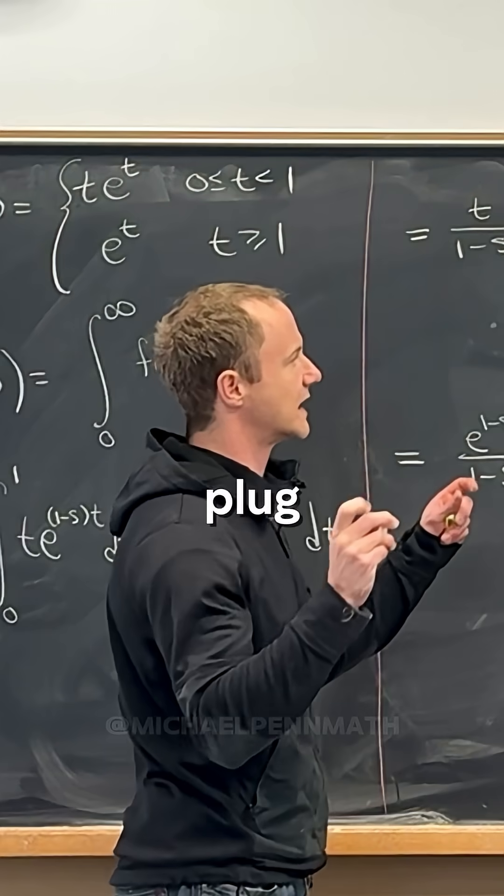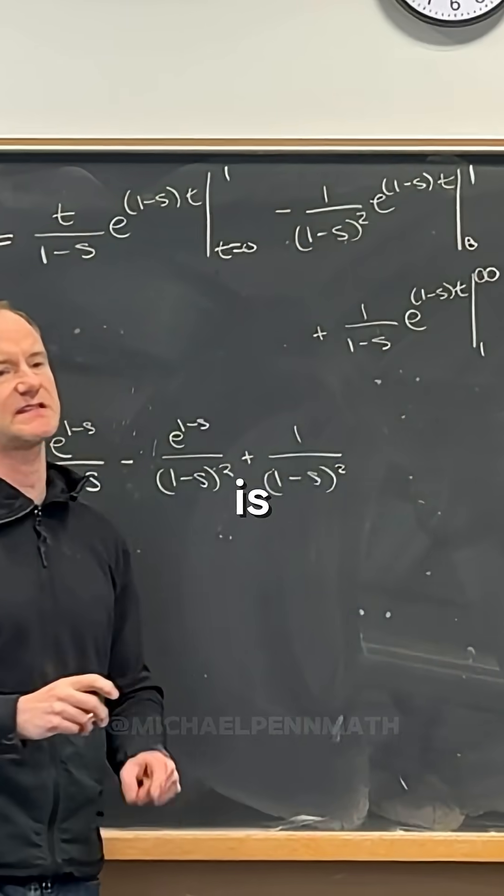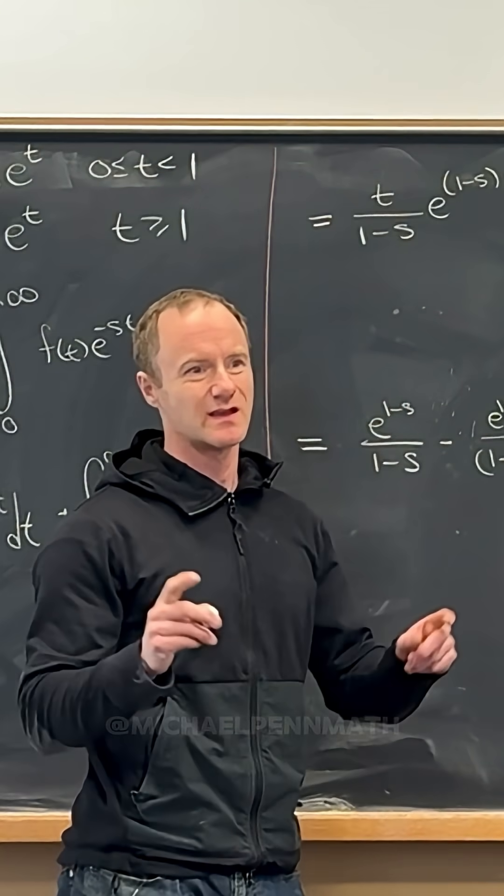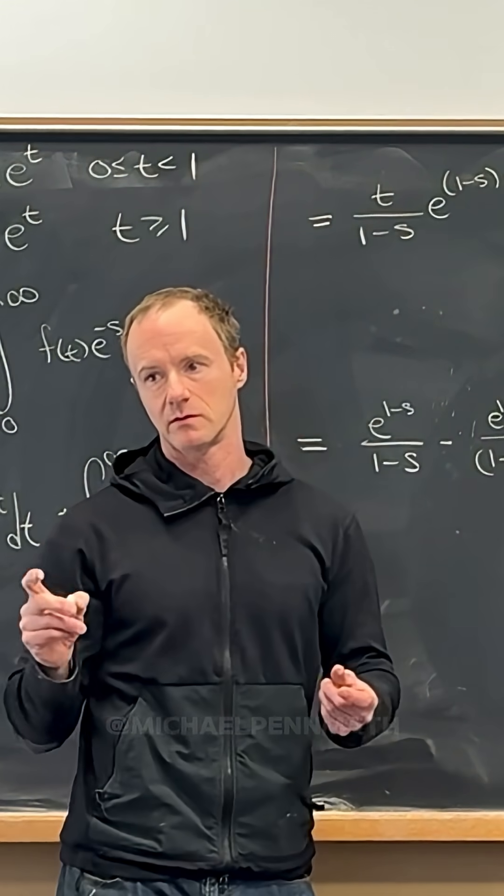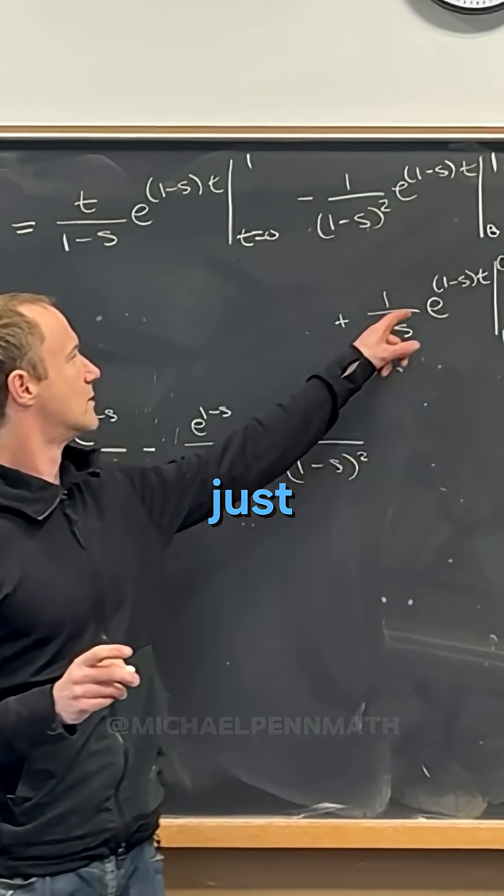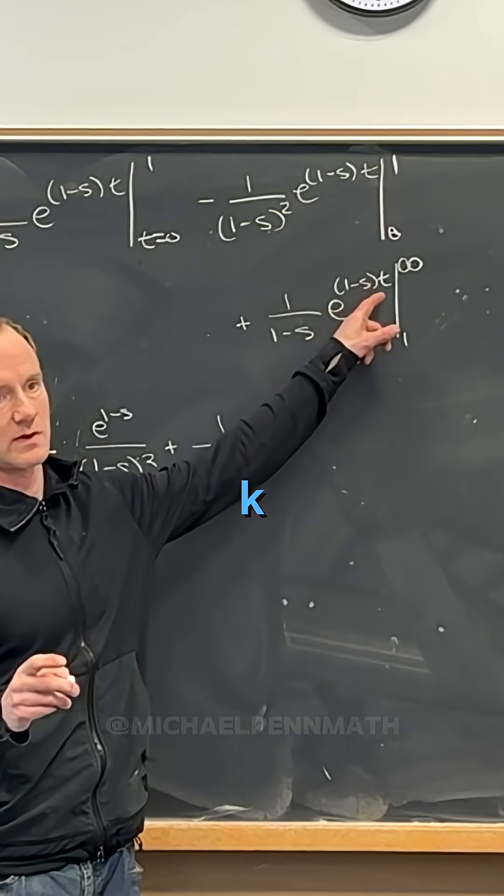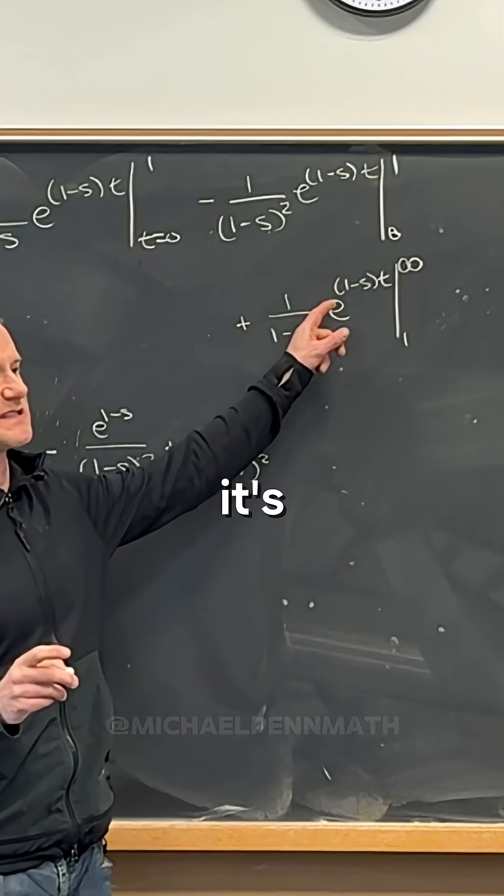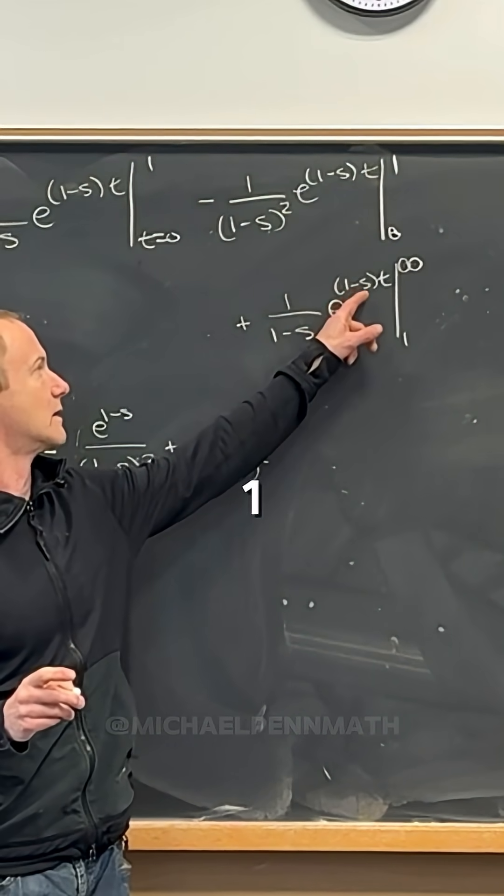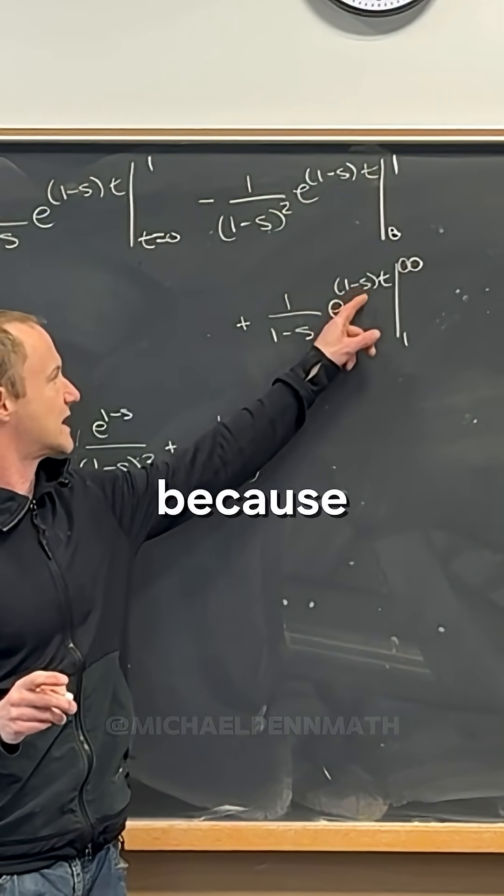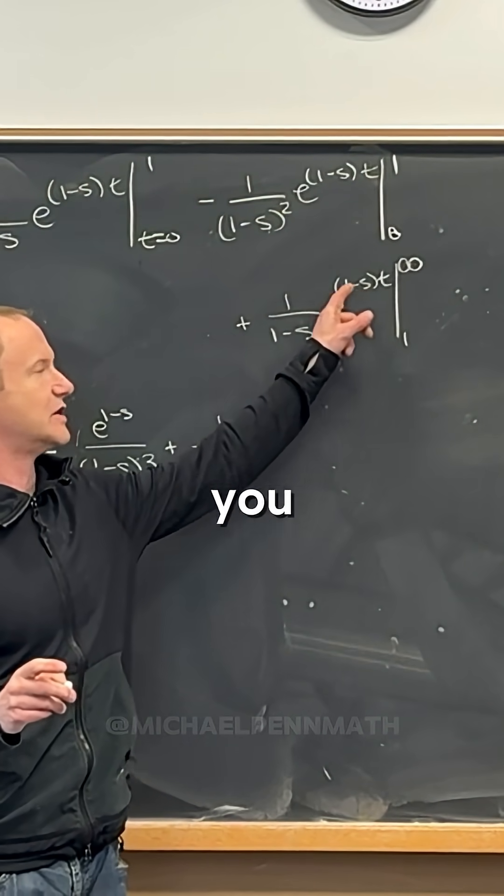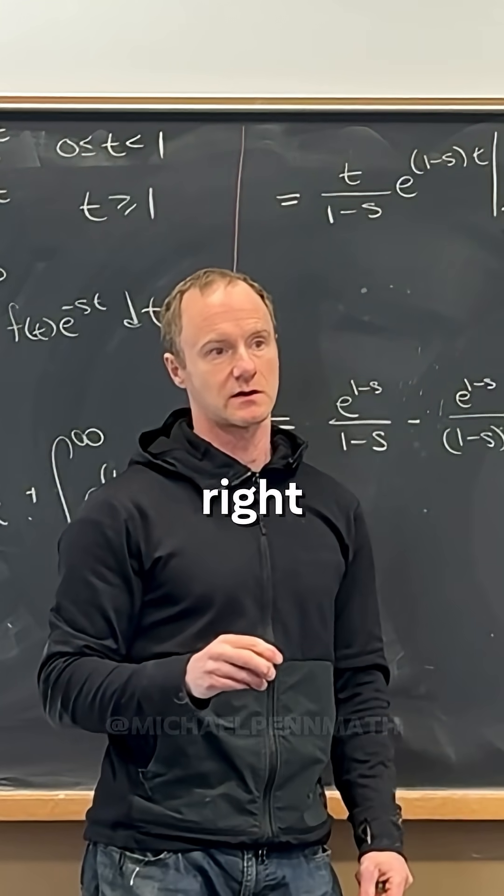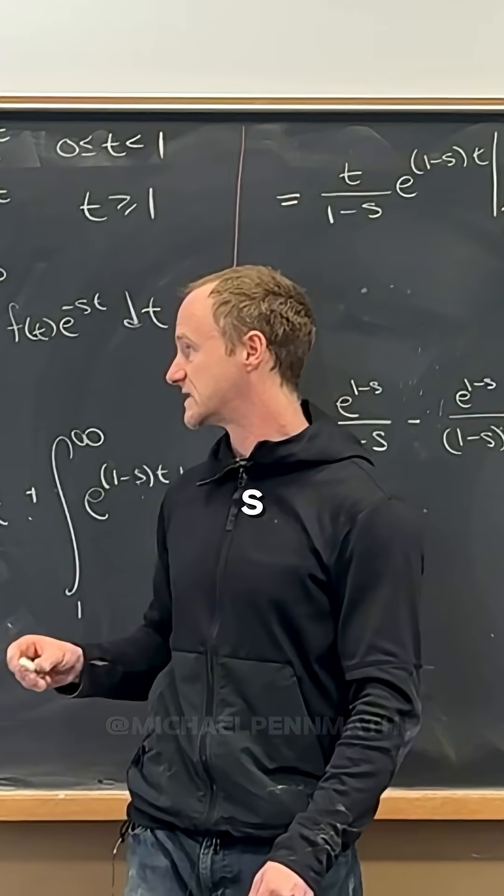So what do we get if we plug in infinity? So keeping in mind, this is important here. Yeah, we're gonna get zero because e just goes... exactly, exactly. Yeah, notice it's important here that s is bigger than one, right? Because if s is not bigger than one, then you have exponential growth. So this actually only works for s bigger than one.